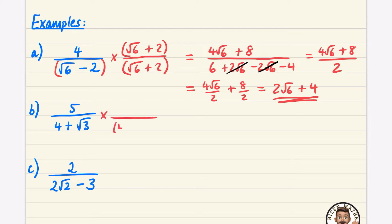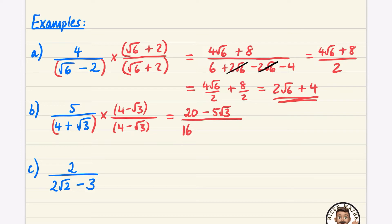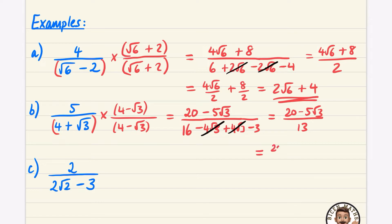For the next one we're going to multiply by the conjugate four minus root three, same on the top and bottom, with brackets. The numerator gives five times four which is 20, and five times minus root three which is minus five root three. For the denominator: four times four is 16, four times minus root three is minus four root three, then plus four root three, and root three times minus root three is minus three. Those middle terms cancel, giving 20 minus five root three over 16 minus three, which is 13.